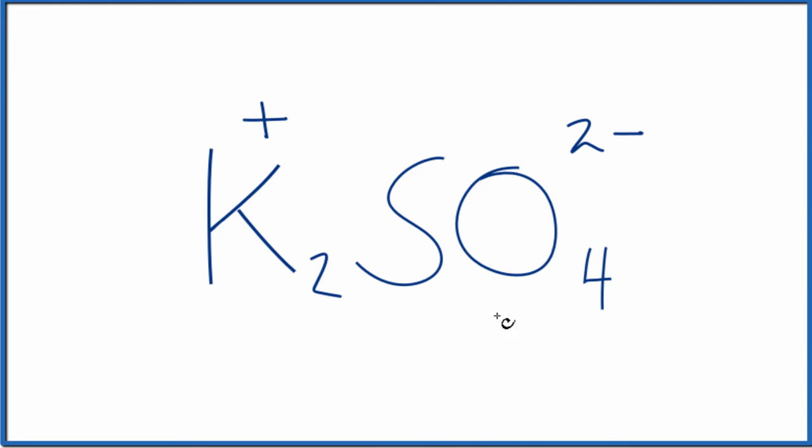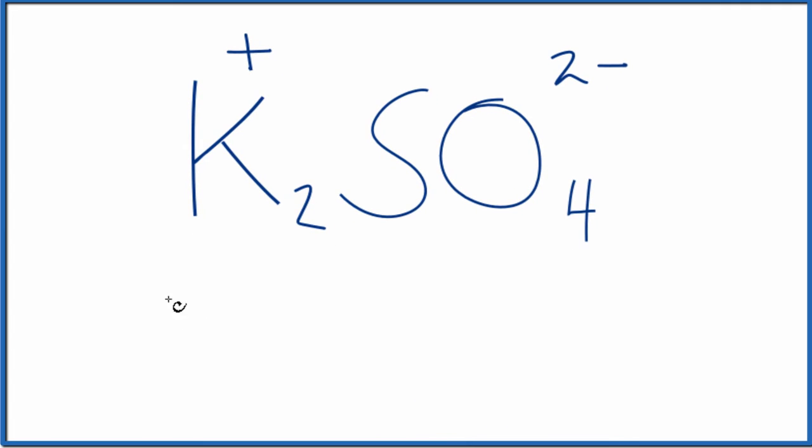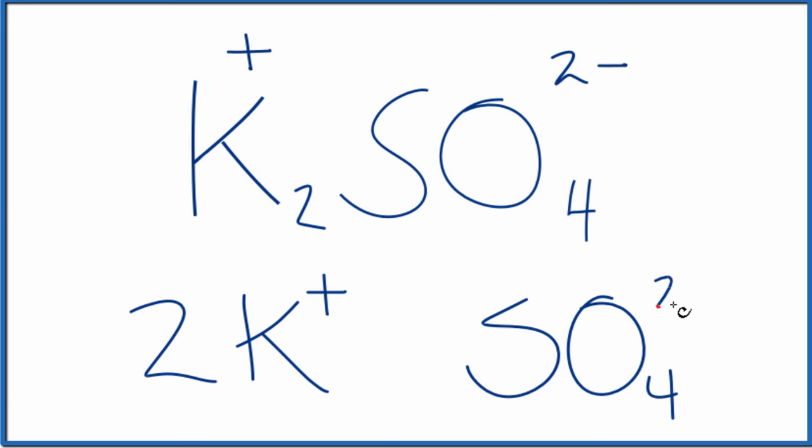So to figure out how many ions we have in K2SO4, we'll have two of these potassium ions, which are one plus, and then we'll have just one of these sulfate ions, SO4, two minus. So two plus one, three.